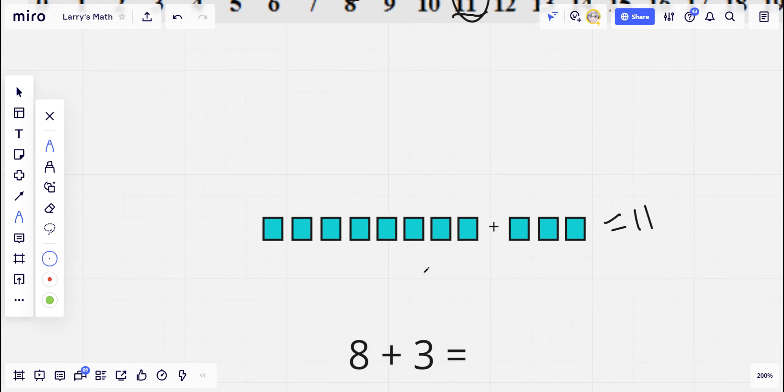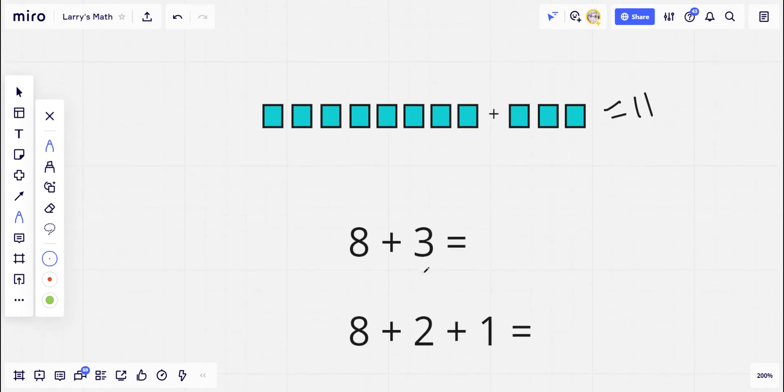Here's a shortcut that I end up using in my head all the time. I take that 3, that second number, and try to break it down into something else. I know pretty quickly that 2 plus 1 is 3, so that's the same as that.